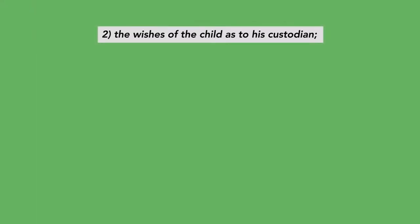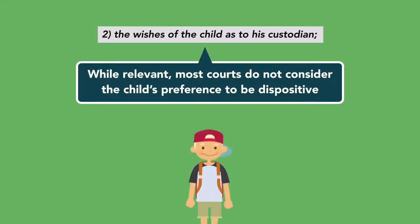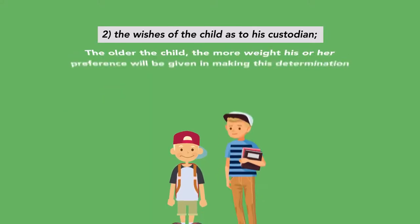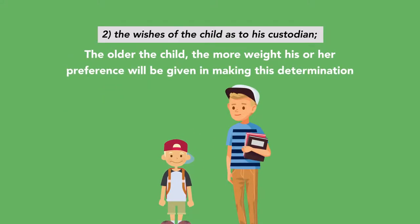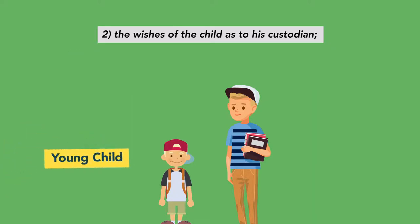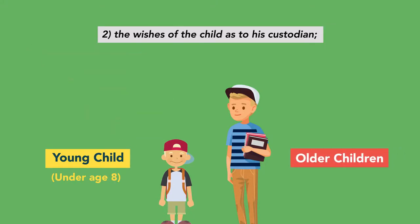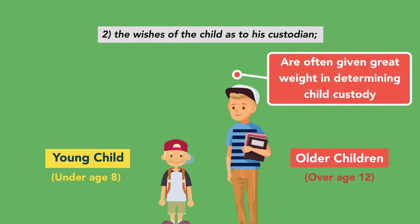Regarding the second factor, the wishes of the child, most courts do not consider the child's preference to be dispositive. In general, the older the child, the more weight her preference will be given. The preference of a young child, generally under age 8, often will not be considered or given much weight. But the preferences of older children, generally over age 12, are often given great weight in determining child custody.